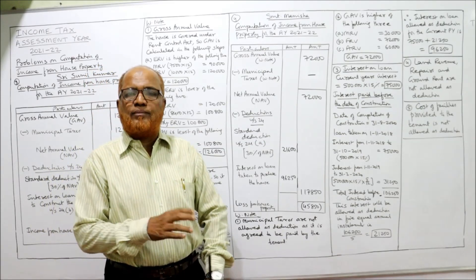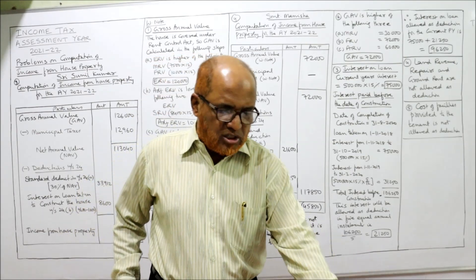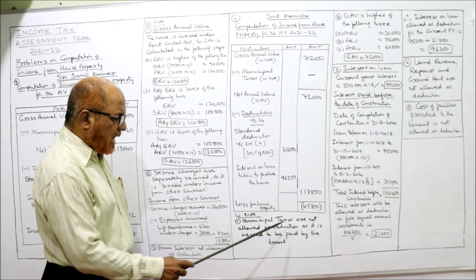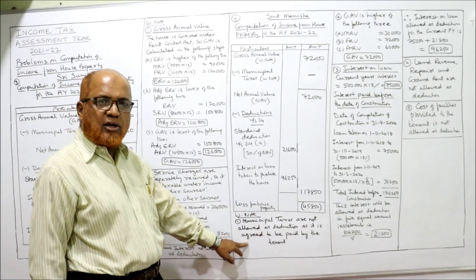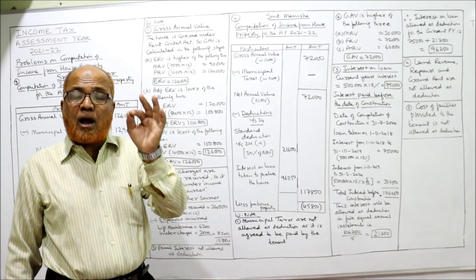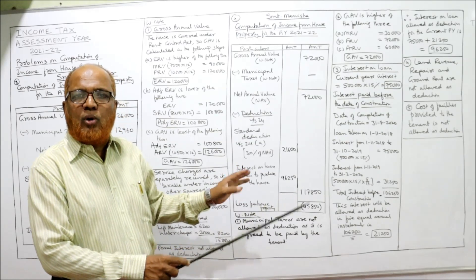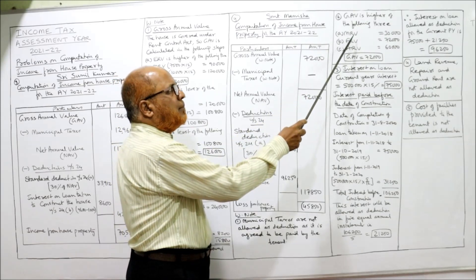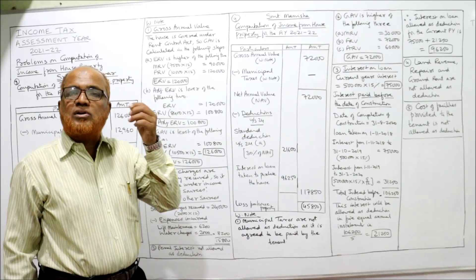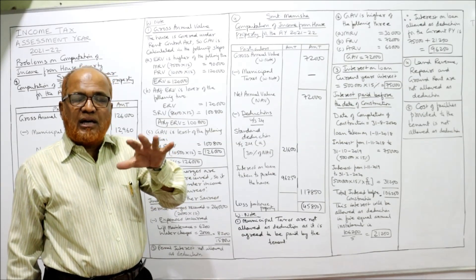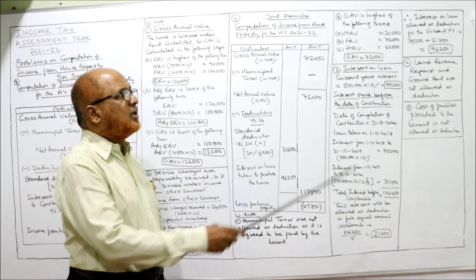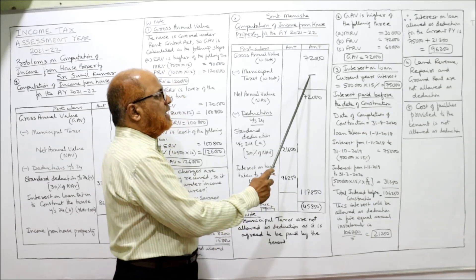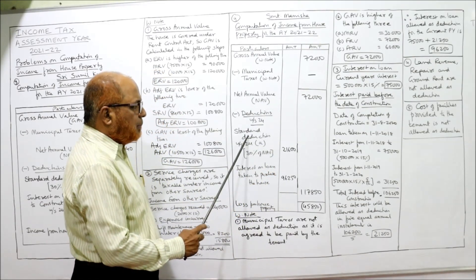That is the only new point in this problem. In the solution format: municipal taxes are not allowed as deduction since they are agreed to be paid by the tenant. In examinations, working notes are compulsory, presented exactly as shown. GAV is the higher of MRV, FRV, and ARV directly — since SRV is not given and the house is not governed by the Rent Control Act. Higher is ₹72,000. GAV = ₹72,000, municipal taxes = nil, NAV = ₹72,000. Standard deduction = 30% of ₹72,000 = ₹21,600.